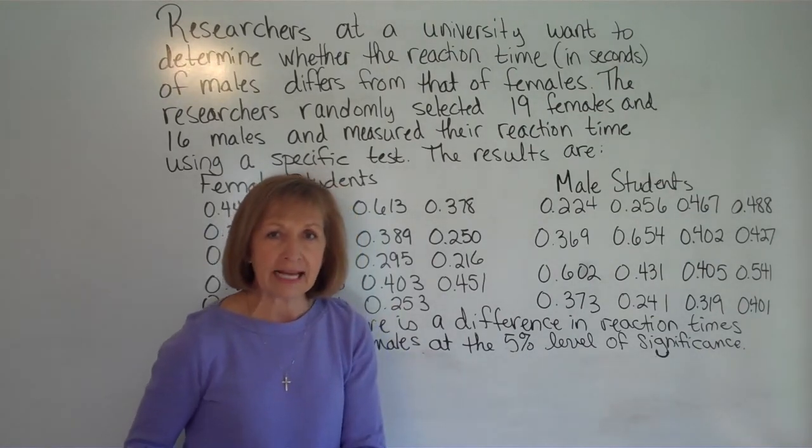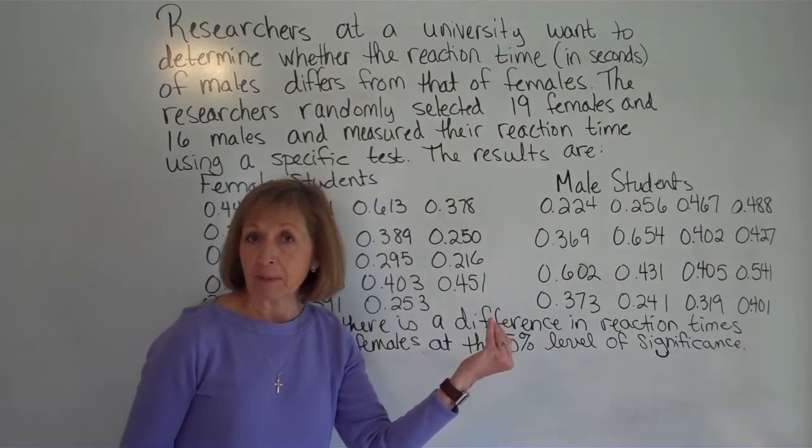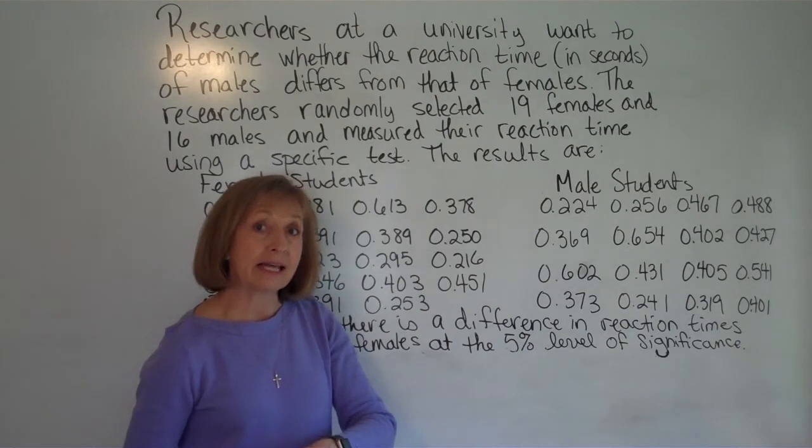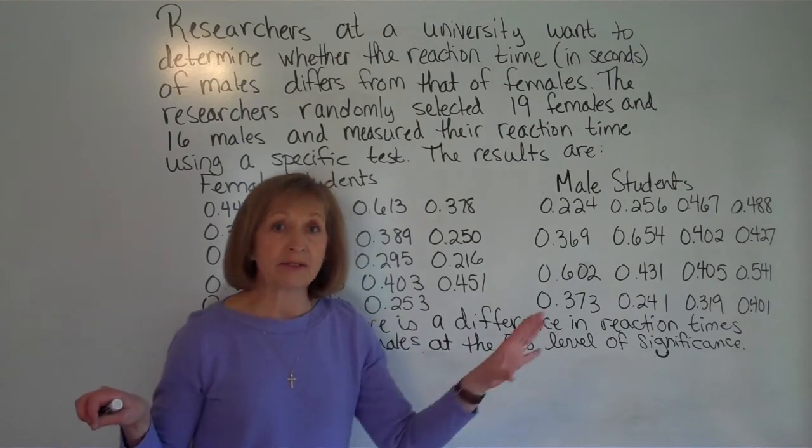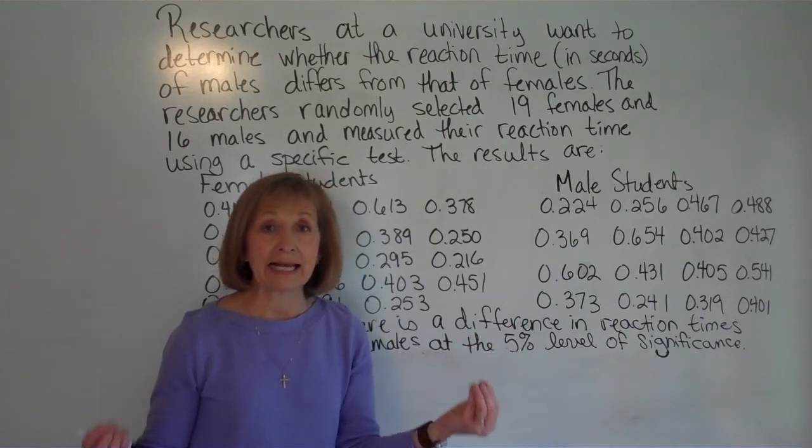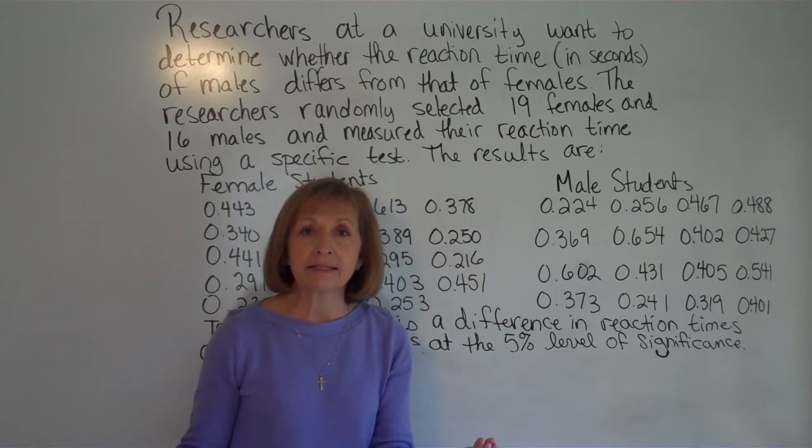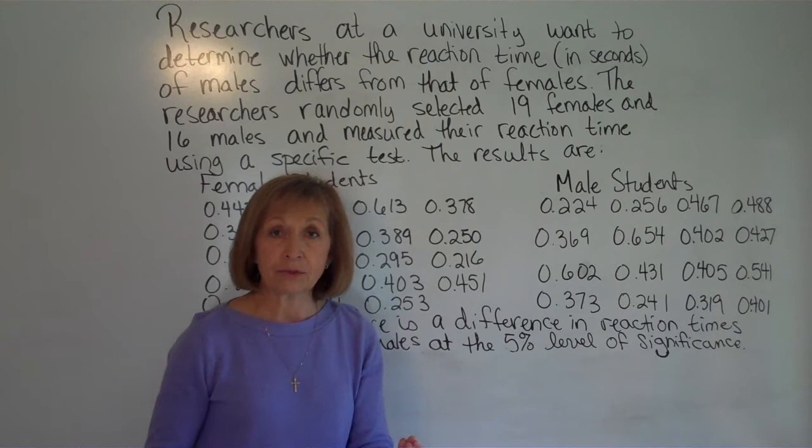Now they didn't give me just the data of one of the groups and say information about the population of another group and ask me to do a test to that comparison number. What they did is they actually sampled from the females and sampled from the males and got data from both groups. So here's where it is a sampled from two groups scenario instead of just a one group.